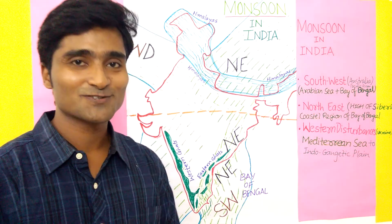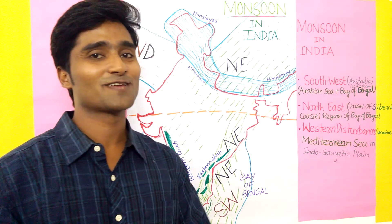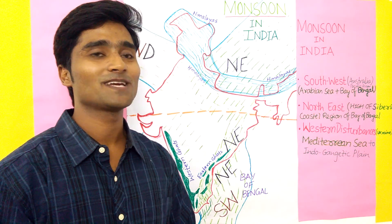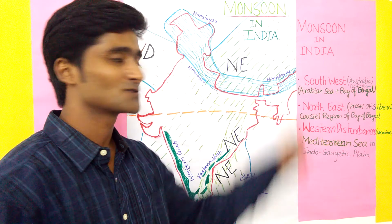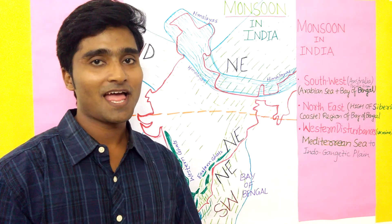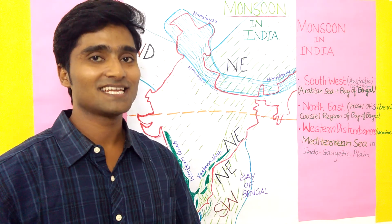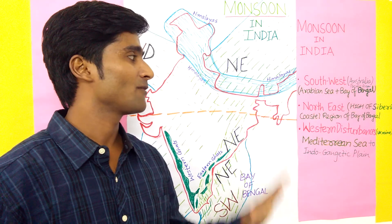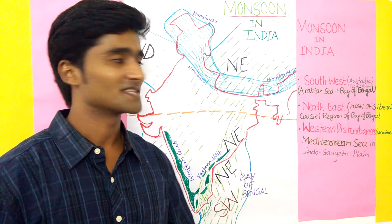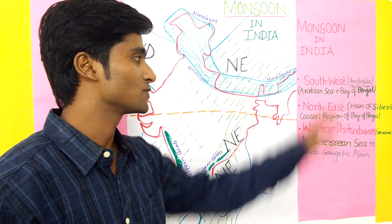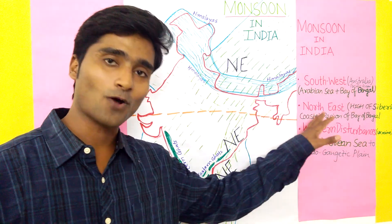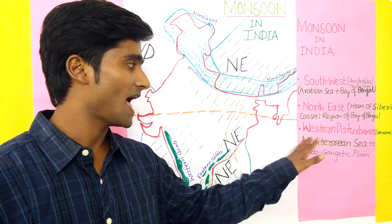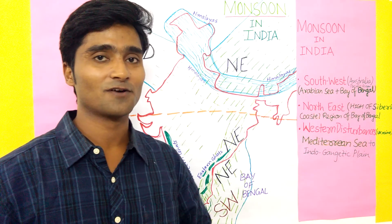Hello friends, I am Ashur Dev and today we have a new topic: monsoon in India. Basically in India there are three main types of monsoon — Southwest monsoon, Northeast monsoon, and Western disturbance.